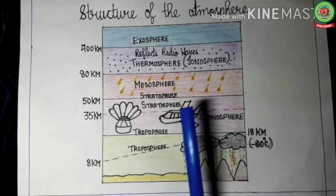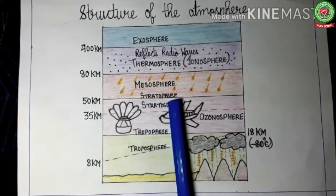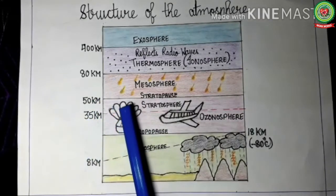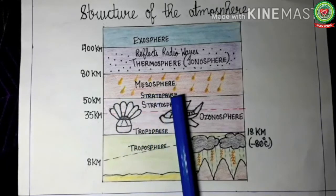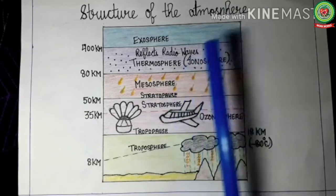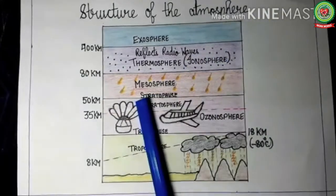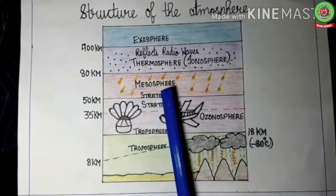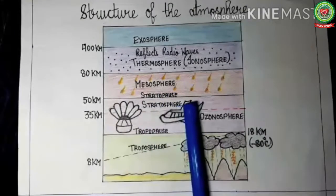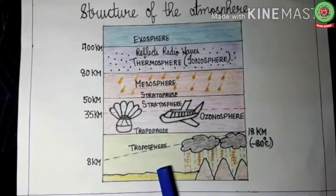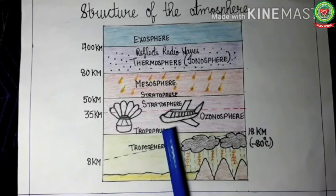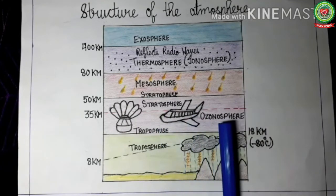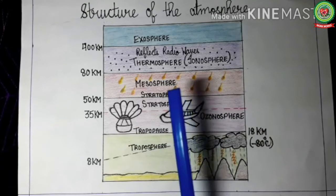The third layer is mesosphere, with a height from 50 km to 80 km. In the mesosphere, the temperature increases because meteors enter and burn up in this layer. The boundary between mesosphere and stratosphere is called stratopause. In stratosphere, unlike in troposphere where temperature was decreasing, the temperature increases with height because ozone gas traps ultraviolet rays, which are very hot.